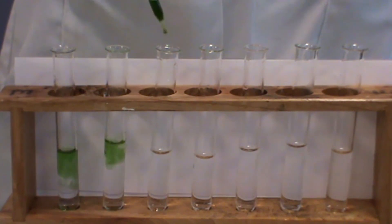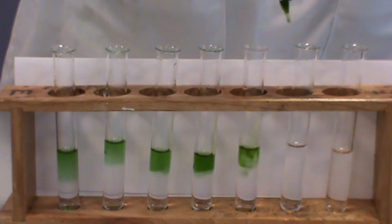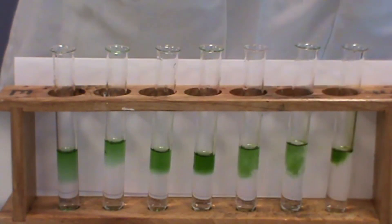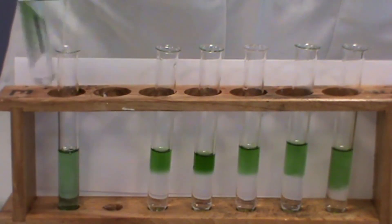Firstly, seven test tubes have been set up and part filled with water. Several drops of universal indicator solution are added to each test tube. The universal indicator remains green, indicating the presence of a neutral solution of pH 7. The test tubes are then shaken up, ready for the next stage.